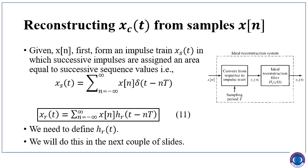The impulse response gives us x_c(t). To obtain the sampled impulses x_s(t), we simply multiply x[n] with delta(t − nT). That is how we input the values of sampling time, and we have converted the sequence to an impulse train.